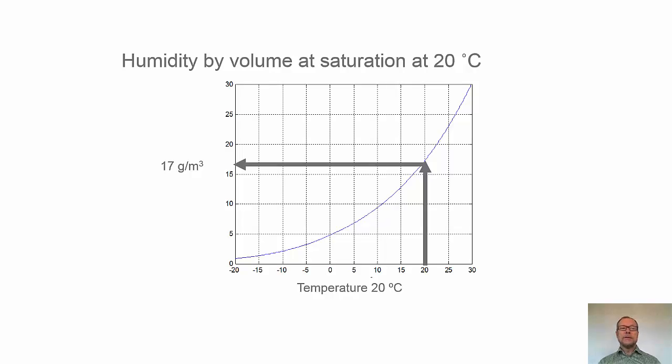Here is the diagram that shows the humidity by volume at saturation. On the x-axis we have the temperature, and on the vertical axis we have the humidity by volume at saturation. At 20 degrees we have around 17 grams per cubic meter, which is the maximum amount. And you see as the temperature increases, up to 30 degrees C, we can have 30 grams per cubic meter.